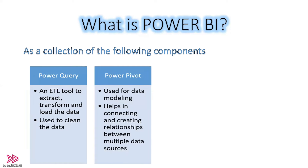The second component is Power Pivot, which is used for data modeling. Power Pivot helps in connecting and creating relationships between multiple data sources. You can load data from an Excel file, a database, a text file or CSV files, or get data from websites or cloud platforms, and then construct a data model using the Power Pivot component.